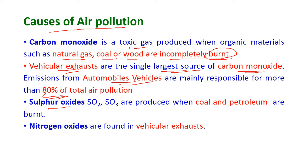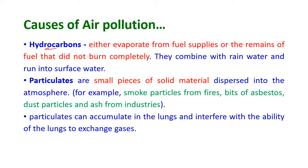Sulfur oxides — SO₂ and SO₃ — are produced when coal and petroleum products are burned. Nitrogen oxides are also found in regular exhaust. Burning is the main cause of air pollution from these sources.